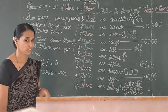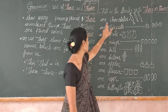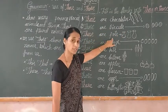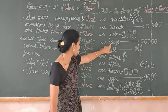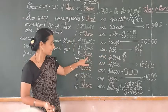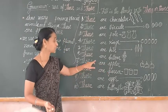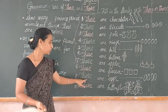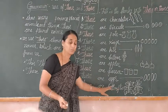Now read all answers once. These are chocolates. Those are biscuits. These are pots. Those are rings. Those are kites. These are balloons. Those are apples. These are glasses. Those are eggs. These are butterflies.